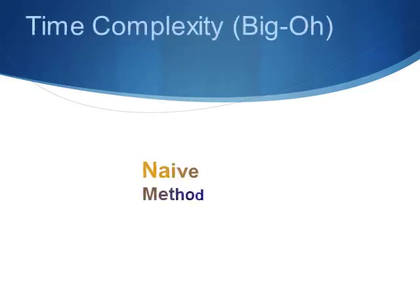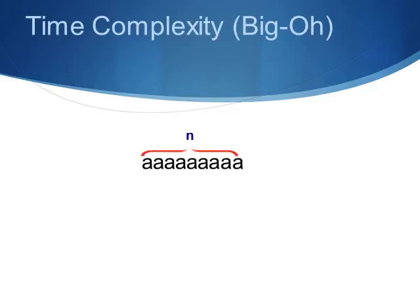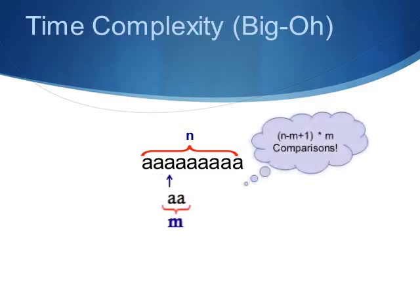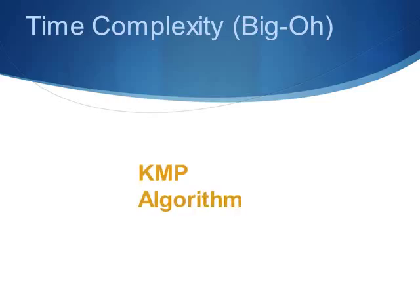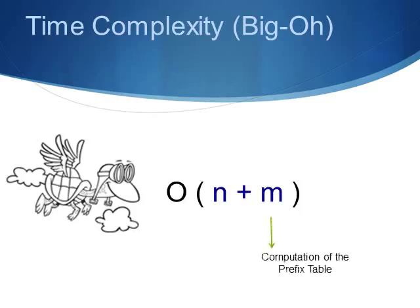As you might have guessed, the KMP algorithm is a lot faster. In terms of Big-O, for the worst case of the naive method, let us have a string of A's of length N and a pattern of length M. We would make a total of (N-M+1)*M comparisons resulting in a time complexity of the order of N*M. On the other hand, the KMP algorithm would take M time for the pre-computation part and linear time for searching.